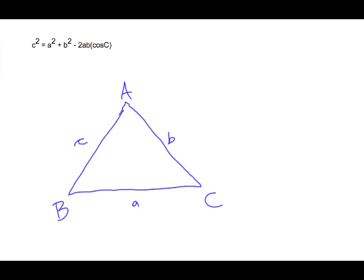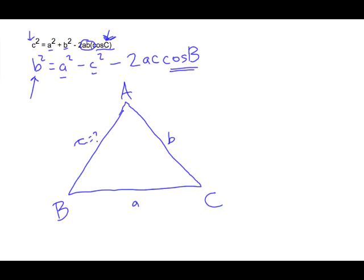Using this equation, C squared is the side we're trying to find. Whatever side length we're trying to find, we must be given its angle in order to use the cosine law. So if you're trying to find your B value, all you do is put B as the unknown, and use the other side lengths — A squared plus C squared — subtracted by 2AC cosine B. Whatever side length you're trying to find, you must be given its corresponding angle.